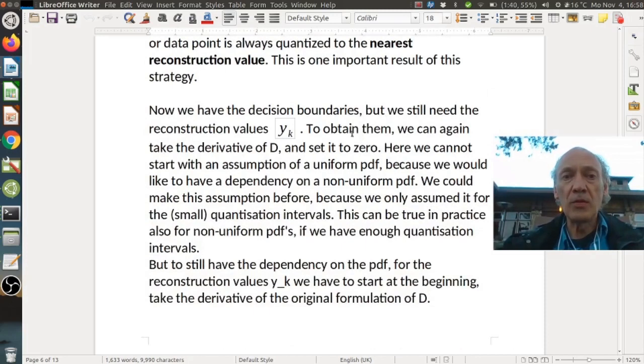So now we have the decision boundaries. But we still need the reconstruction values y_k. Right. From our optimization. To obtain them we can again take the derivative of d and set it to zero. Here we cannot start with an assumption of a uniform pdf. Because we would like to have a dependency on a non-uniform pdf. We couldn't make this assumption before. Because we only assumed it for the small quantization intervals.